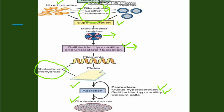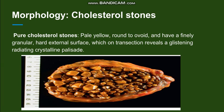Going to the morphology of the cholesterol stones: they are yellow in color and round to ovoid in shape. They have a hard external surface, and on cutting, there is a glistening cut section.